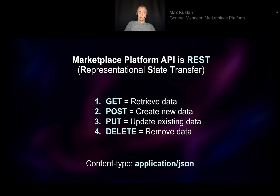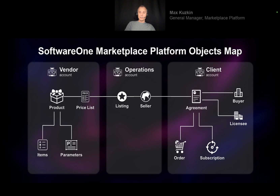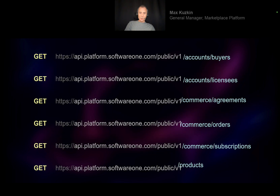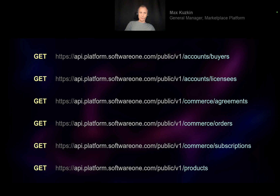There are cases when you need to upload binary files, but as a general rule it is application/JSON. The API is structured around our objects map. For every object in the platform — like agreement, buyer, licensee, order, or subscription — you will get a collection in our REST API to work with. All of those collections work exactly the same way, so if you know one, you'll be able to work with any other. To read the list of buyers, licensees, or agreements you perform a GET on that collection. The base URL for all collections is our API endpoint: /public/v1, where v1 is our current API version.